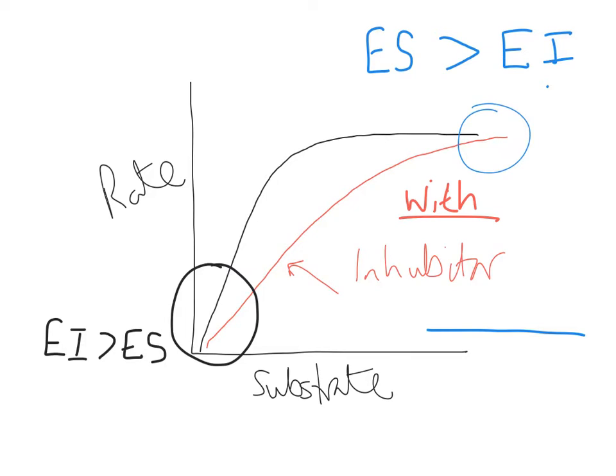Maximum rate is still reached, and that's an absolute classic way of recognising, if you were given a graph in an exam question, what type of inhibitor you're dealing with. If it can reach its maximum possible rate that you would see without the presence of an inhibitor, then you know it must be a competitive inhibitor.